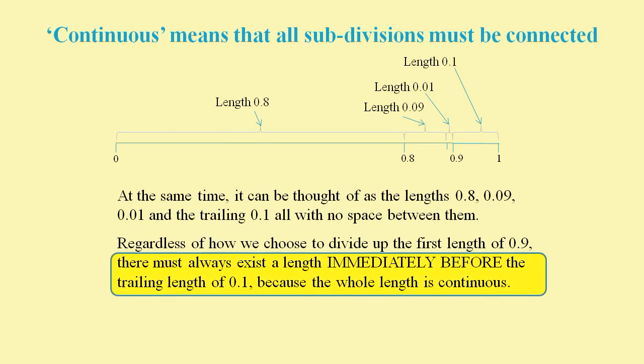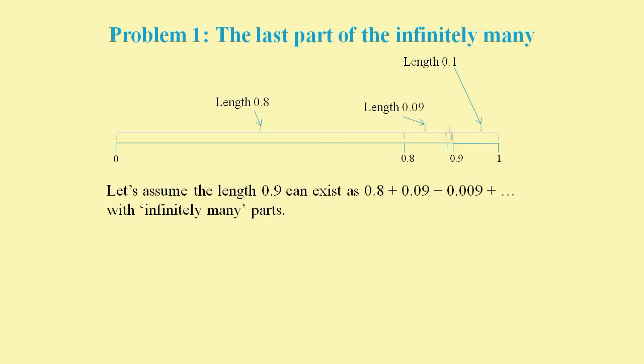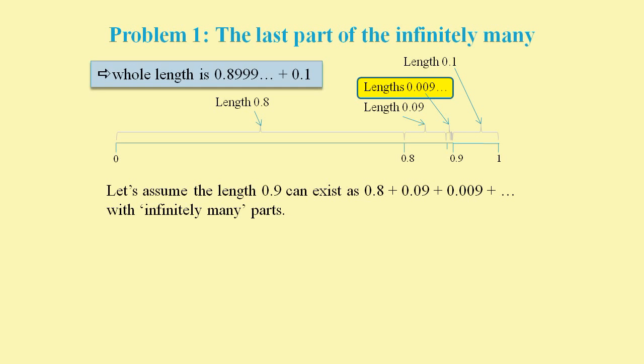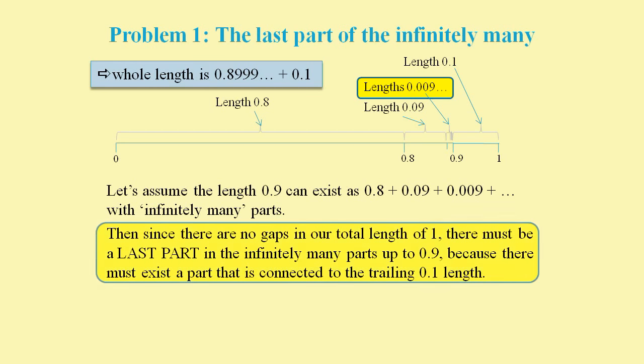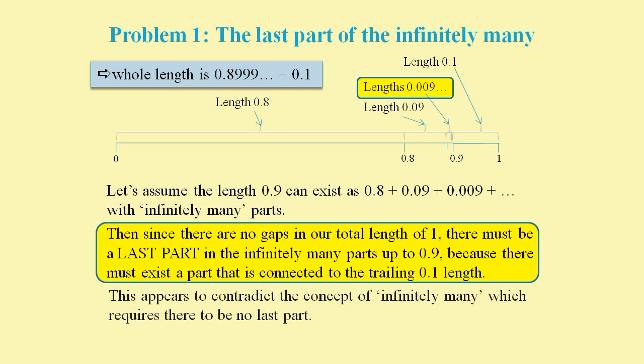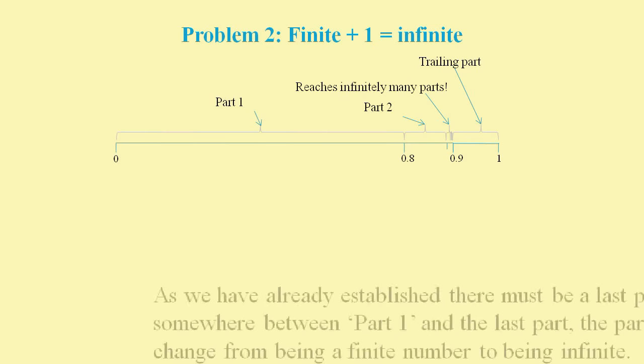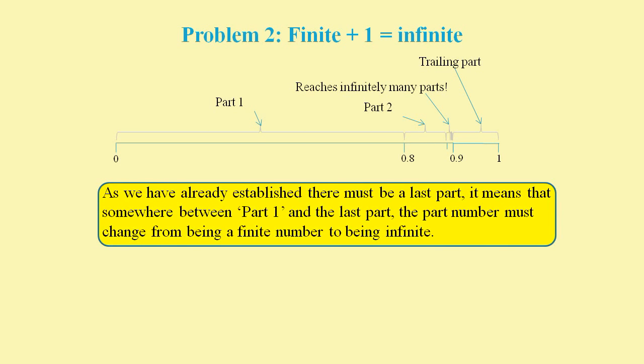So now let's suppose that we can divide the first 0.9 length into infinitely many parts, where each part corresponds to a decimal digit in the number 0.8999999 and so on. Since the whole length is continuous, there must be a length immediately before the last length of 0.1, but that would mean that the infinitely many parts would have a last part, which forms a contradiction. Another consequence is that somewhere there must be a place where the number of parts changes from being a finite value to being an infinite value. And so yet again, this forms a contradiction.